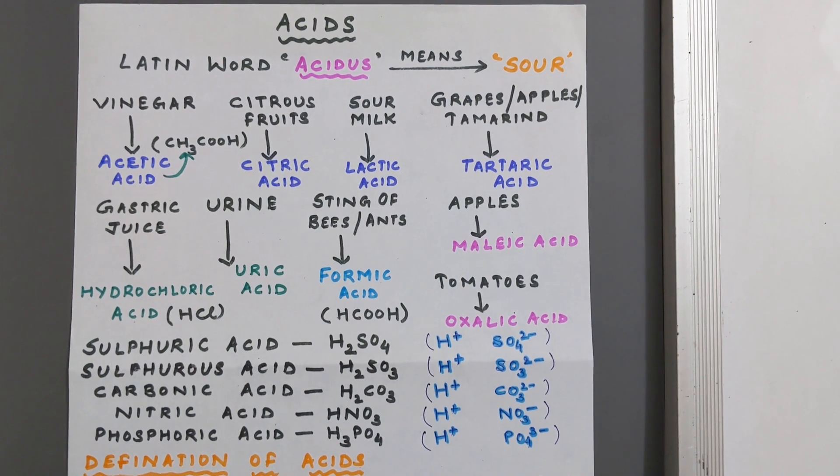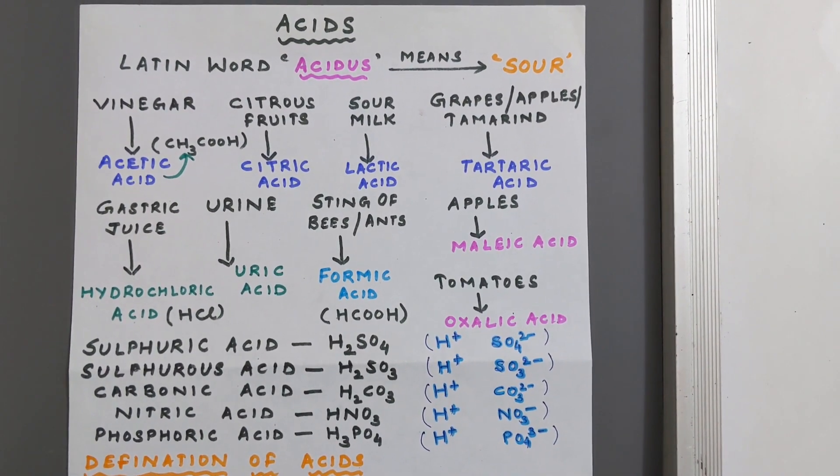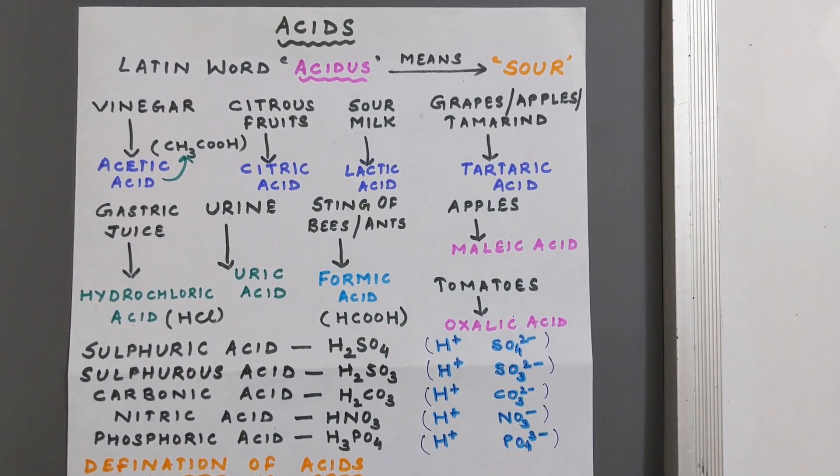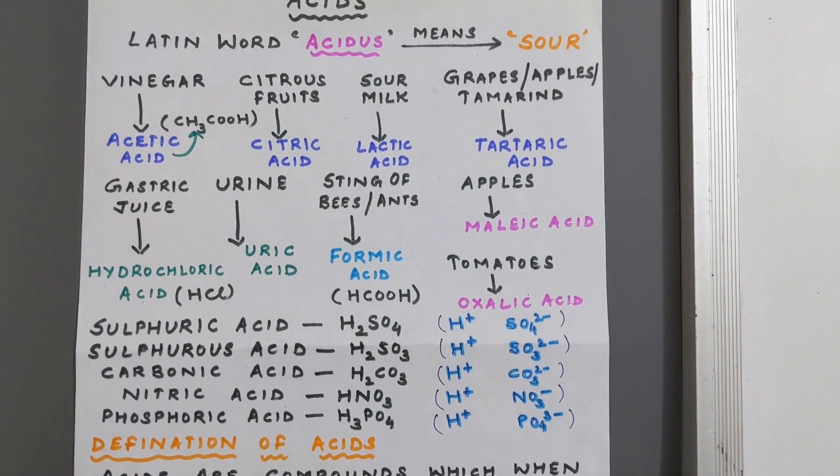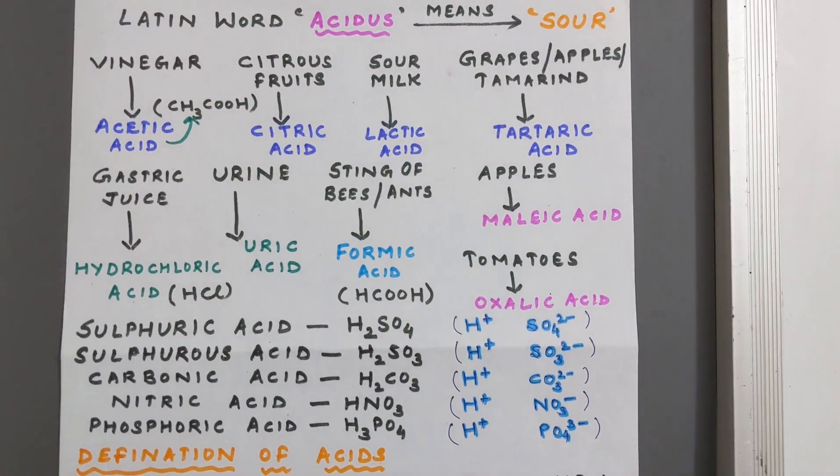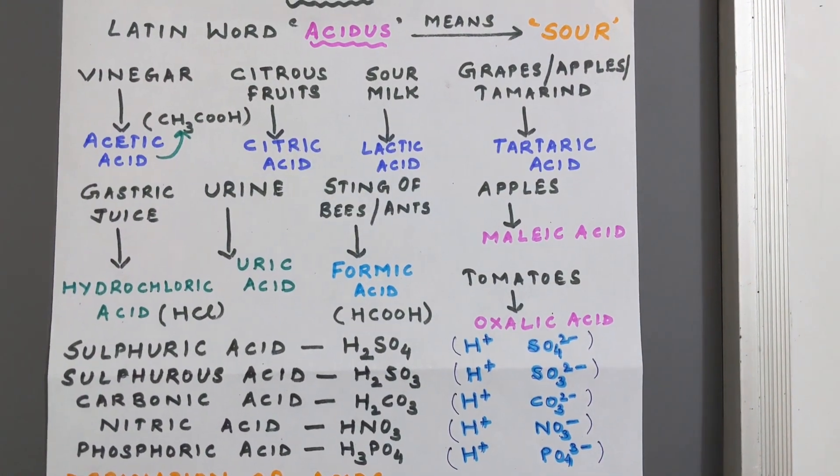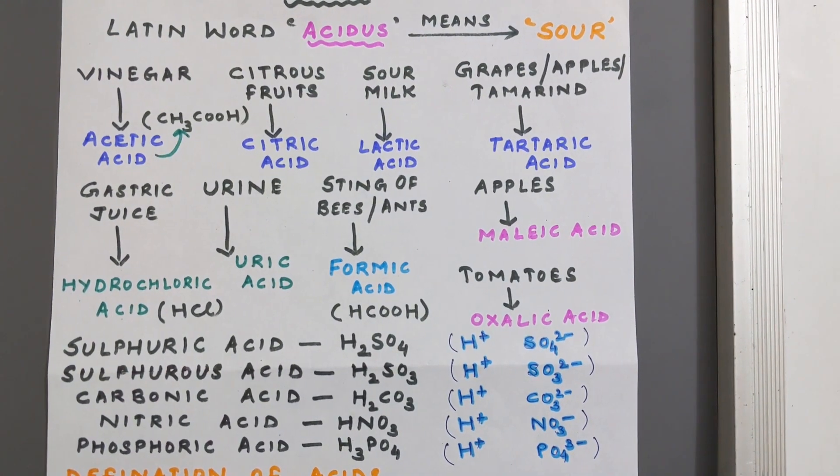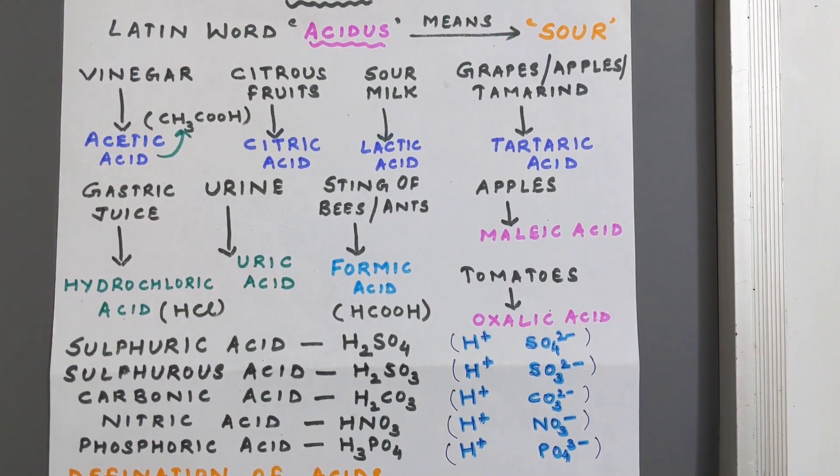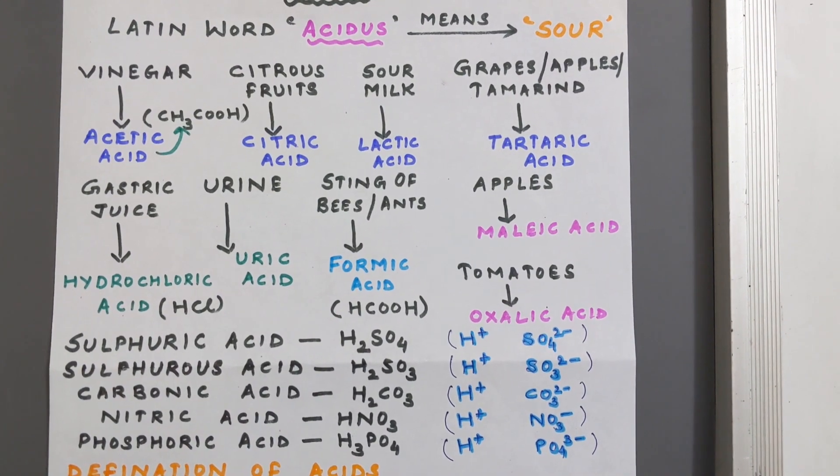Most of the acids here are organic acids, about which you will study in organic chemistry. However, hydrochloric acid is not an organic acid; it is a mineral acid. Now you are also familiar with these acids: sulfuric acid H2SO4, sulfurous acid H2SO3, carbonic acid H2CO3, nitric acid HNO3, and phosphoric acid H3PO4.